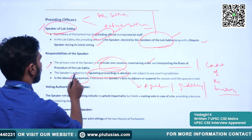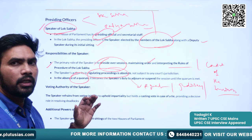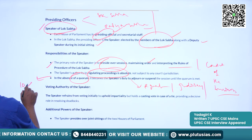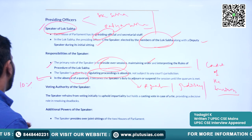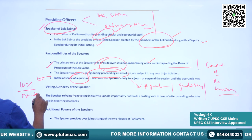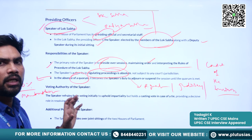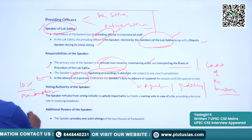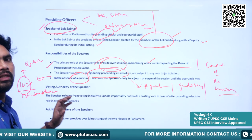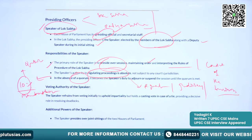In the absence of quorum, it becomes the speaker's duty to temporarily adjourn or suspend the sittings of the house. Quorum means that at least 10% of the membership of the house should be present to conduct its business. When quorum is not there, the speaker temporarily halts the business of the house.